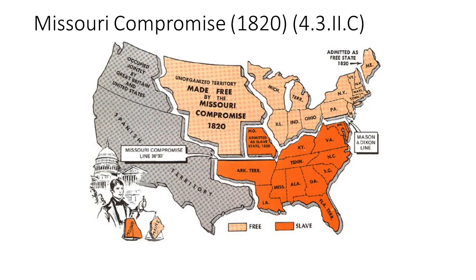In comes Henry Clay, the Great Compromiser. The Missouri Compromise: Missouri enters as a slave state; Maine — carved out of Massachusetts — enters as a free state, keeping the balance in the Senate. They also draw a line at 36 degrees 30 minutes, where no slavery would be allowed north of that line in the Louisiana Purchase territory, besides Missouri. We'll see if that causes issues later.